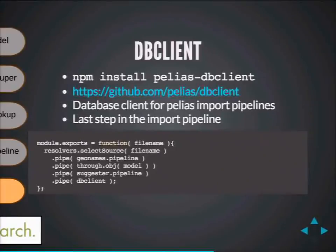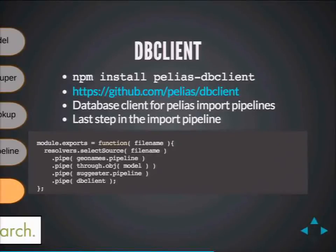GeoNames has about 9 million points, and running through the importer for the entire planet takes around two hours, which is not bad at all. However, we're still working on the OpenStreetMap importer, which takes around five days for the entire planet. We're working on making it faster by using Golang parsers and experimenting with C parsers as well. You can join the conversation at the repo.